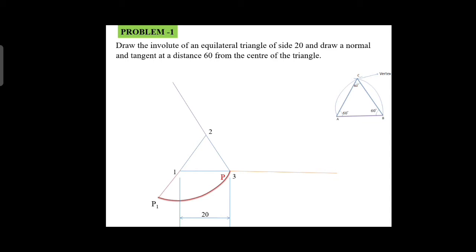Next, 2 as center and 2P1 as radius, you draw an arc from point P1 up to the extension line of 2. You will get P2. Next, 3 as center and 3P2 as radius, you draw an arc from P2 up to the extension line of 3. You will get P3. This is the involute curve on the equilateral triangle.